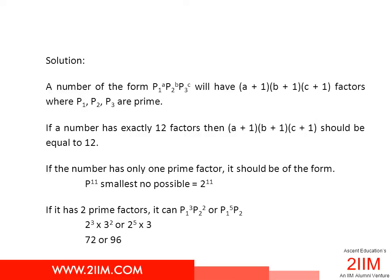Assume the number has 2 prime factors or can be written as p₁^a × p₂^b. Obviously (a+1)(b+1) should be 12, which can be written as either 2×6 or 3×4. So the number has to be of the form p₁³p₂² or p₁⁵p₂. The smallest combination possible is 2³×3² or 2⁵×3.